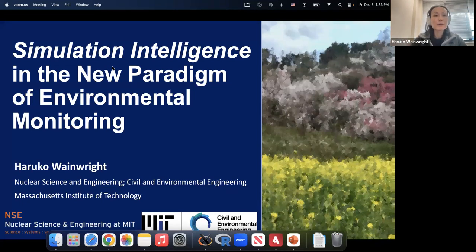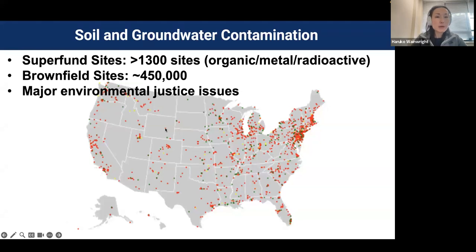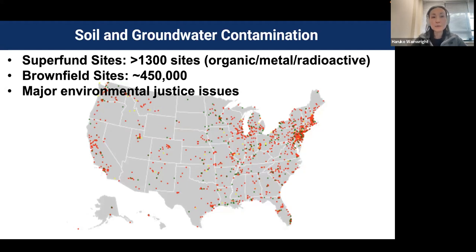We are aiming to build a new paradigm of environmental monitoring. I work on nuclear-specific contamination, but I also work more broadly on groundwater contamination. It is a widespread environmental problem across the world. Within the US, there are more than 1,000 so-called Superfund sites — large-scale contamination that can be organic, metal, or radioactive. In addition, there are more than 400,000 brownfield sites that have some sort of contamination.